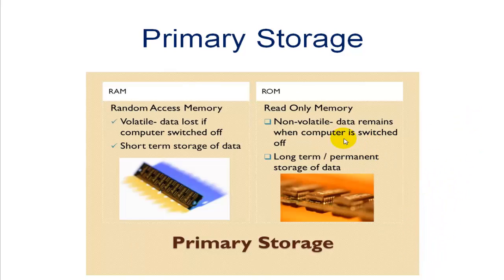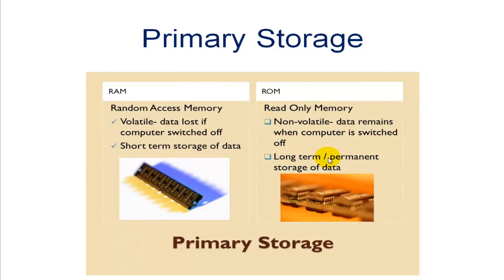Primary storage: RAM — Random Access Memory — is volatile; data is lost if the computer is switched off. It is used for short-term storage of data. ROM — Read Only Memory — is non-volatile; data remains when the computer is switched off. It is used for long-term, permanent storage of data.